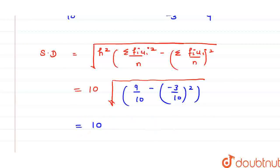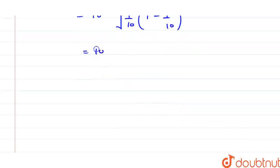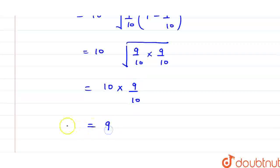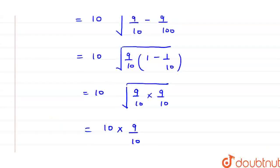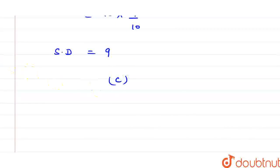Now this is 10 into under root: this is 9 by 10 minus this will be 9 by 100. So if we take LCM here then let us take this 9 by 10 common. Then this will be 1 minus 1 by 10, which is 10 under root 9 by 10 into 9 by 10. So this will be 10 into 9 by 10, so this equals 9. So the standard deviation is 9. Now let us check the options we are provided. 9 is option C. So we have got that option C, which is standard deviation is 9, is the required answer for this question.